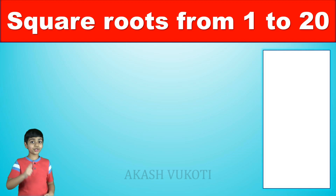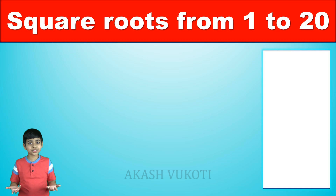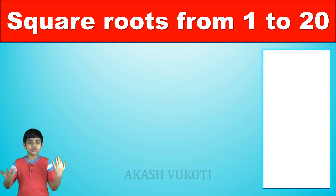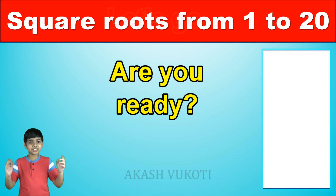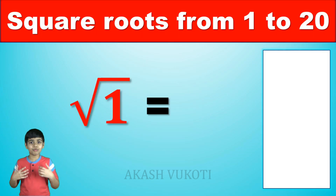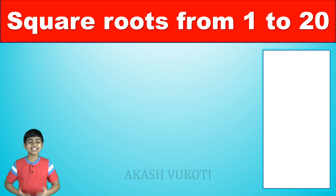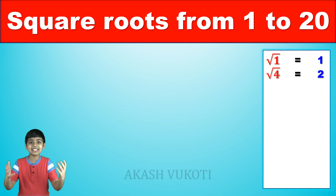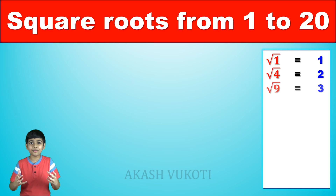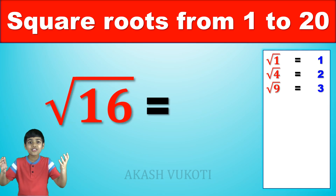Now it's your turn to say them. I'm going to say the square root of a number and you will say the answer, for these square roots whose values are the numbers 1 through 20. So you ready? Then let's go. The square root of 1 is 1. The square root of 4 is 2. The square root of 9 is 3. The square root of 16 is 4.